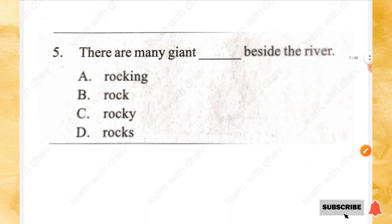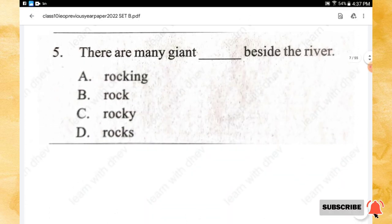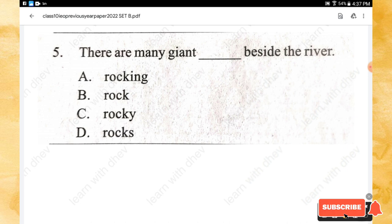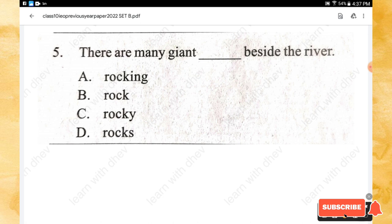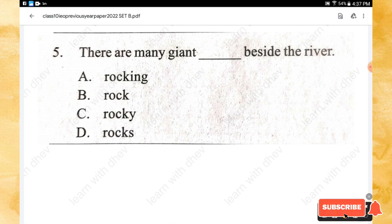Question 5: There are many giant _____ beside the river. Options: rocking, rock, rocky, rocks. The right answer is rocks — there are many giant rocks beside the river.